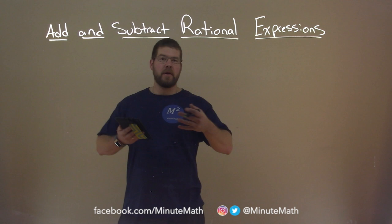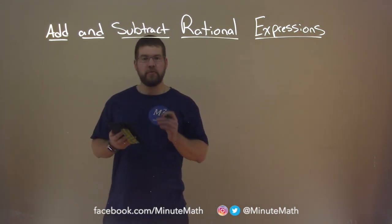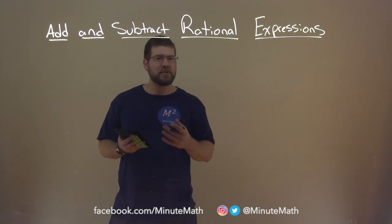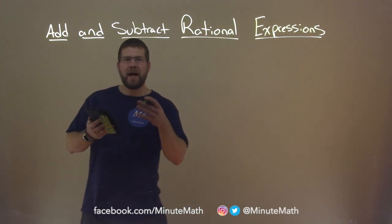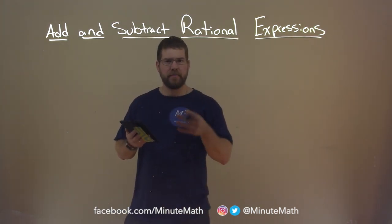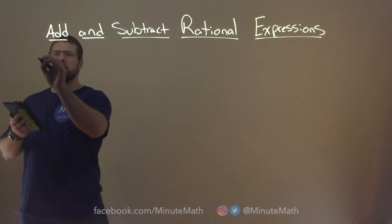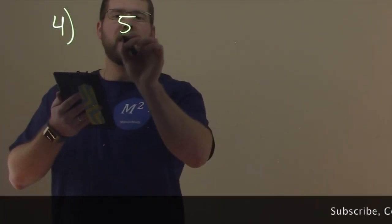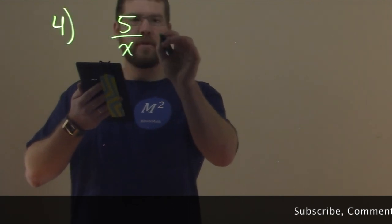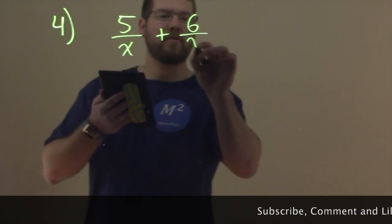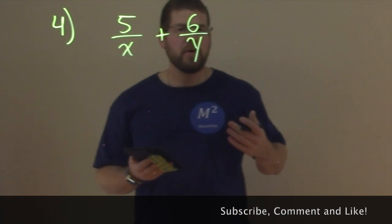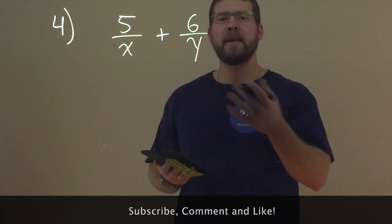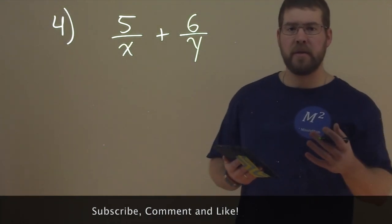So adding and subtracting rational expressions can be tricky. One thing we come into issues with sometimes is when we don't have the same denominator. So let's see an example here. We're going to add these two expressions: five over x plus six over y. And if you remember adding and subtracting fractions in the past with just numbers, we had to find a common denominator here.